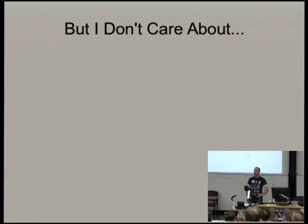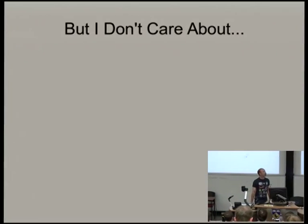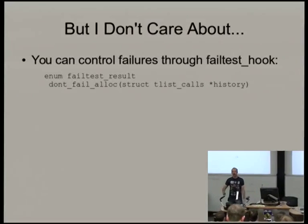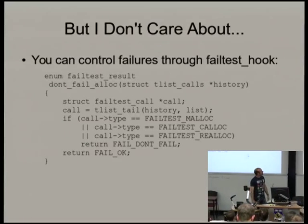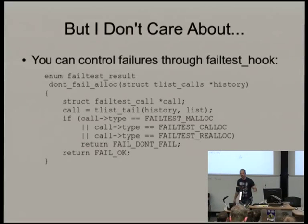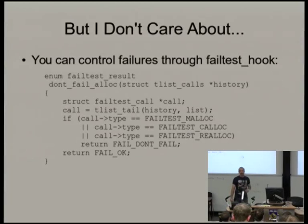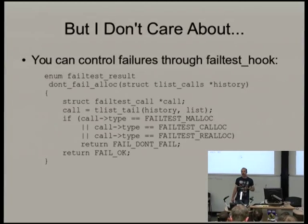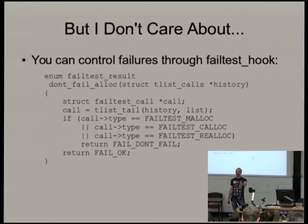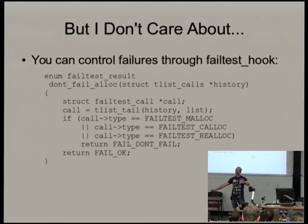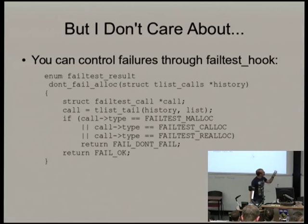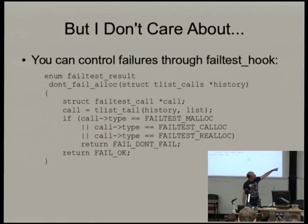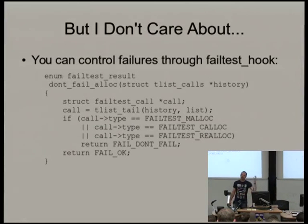If you don't want to fail malloc, there's a hook called fail_test_hook. At every point you can get the history of all calls and return one of three results: FAIL_DONT_FAIL (don't inject a failure here), FAIL_OK (yes, inject a failure), or FAIL_PROBE (fail once — you'll only ever get one fail_probe in a call chain). In the example we grab the tail of the history linked list, and if it's a malloc, calloc, or realloc we return FAIL_DONT_FAIL — so those are never failed.